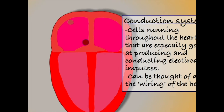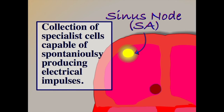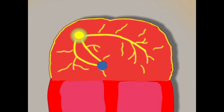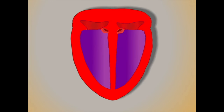The system starts with the sinus node. This collection of specialist cells sits in the right atrium and acts as the heart's natural pacemaker. These cells spontaneously produce electrical impulses at regular intervals, a little like the spark plugs of a car. From the sinus node, the electricity is transmitted along several pathways throughout the atrium, causing the top chambers to contract, pushing blood down into the ventricles below.